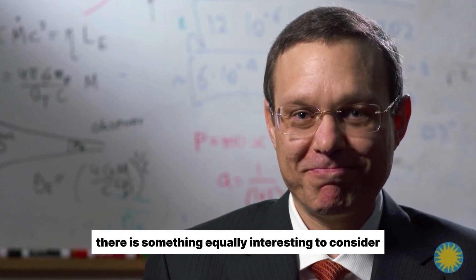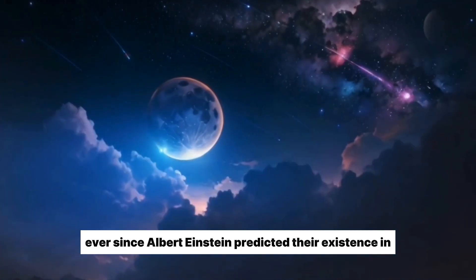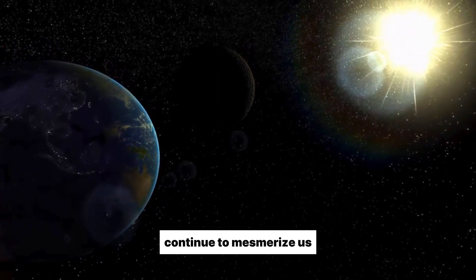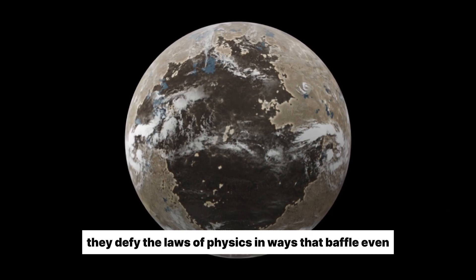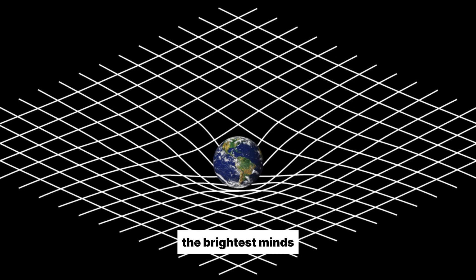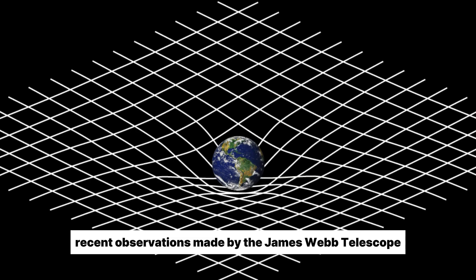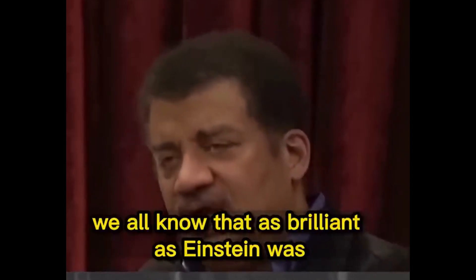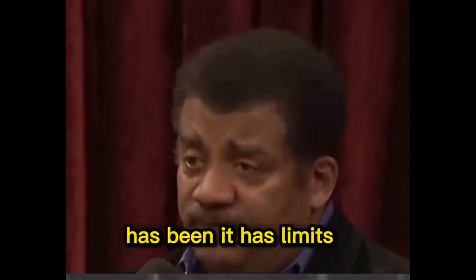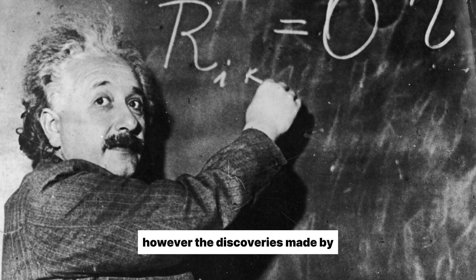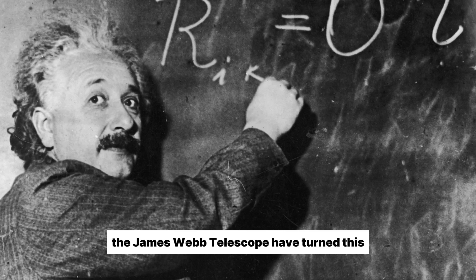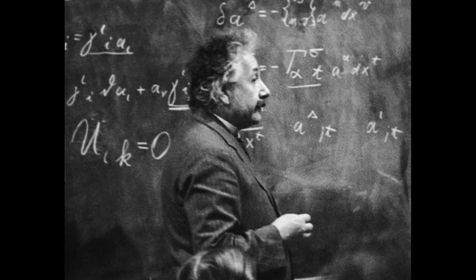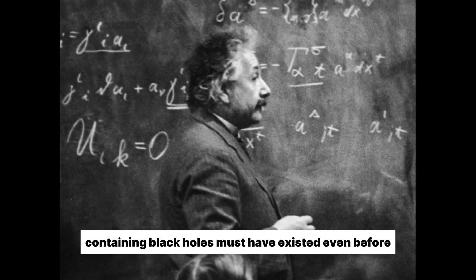Black holes have captivated scientists ever since Albert Einstein predicted their existence in his theory of general relativity. These cosmic behemoths, with their intense gravitational pull, continue to mesmerize us with their mysterious nature. They defy the laws of physics in ways that baffle even the brightest minds. Surprisingly, recent observations made by the James Webb Telescope have challenged our previous assumptions about black holes. We all know that as brilliant as Einstein was, and as successful as his general theory of relativity has been, it has limits where gravity becomes infinitely strong. However, the discoveries made by the James Webb Telescope have turned this understanding on its head. The telescope has revealed that black holes were more abundant and massive in the early universe than we originally thought.